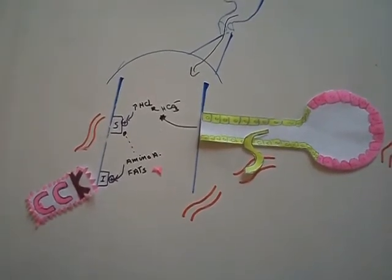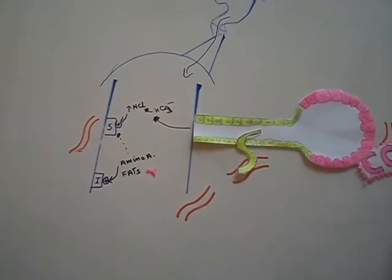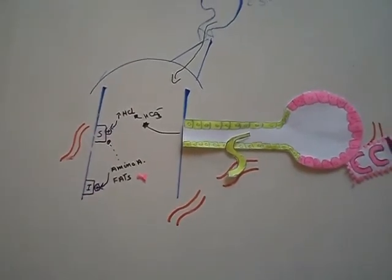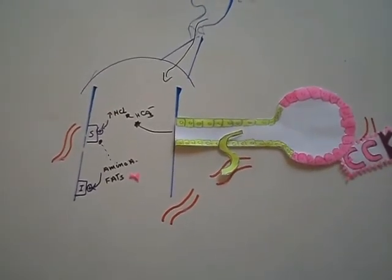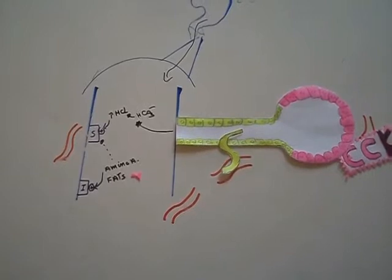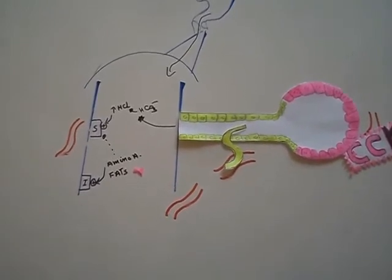CCK will enter the circulation and will affect the acinus of the pancreas to produce a pancreatic juice which is high in enzymes and low in bicarbonate.